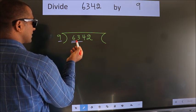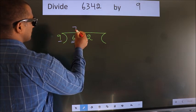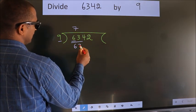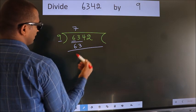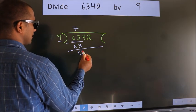When do we get 63 in 9 table? 9 7s, 63. Now, we should subtract. We get 0.